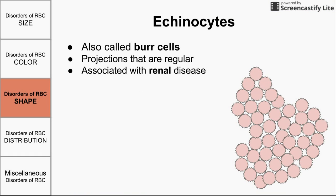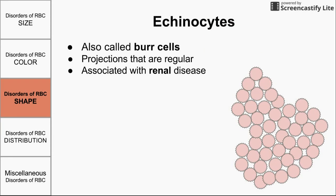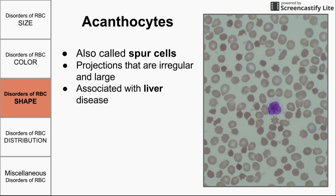Echinocytes, also called burr cells, have little spiky projections around the cells. In burr cells, these projections are regular — about the same size all the way around the cell. Burr cells are associated with renal disease. Similar to burr cells are spur cells, whose fancy name is acanthocytes. Acanthocytes differ from burr cells in that their projections are irregular — not evenly spaced and not necessarily the same size. Spur cells are associated with liver disease.